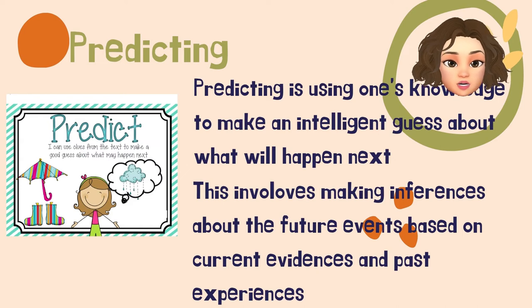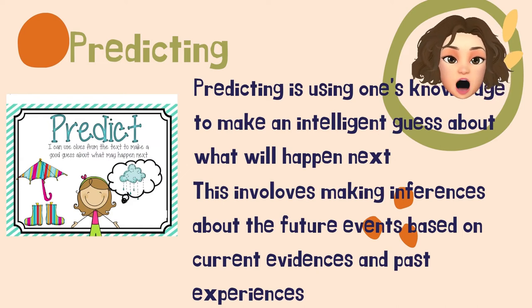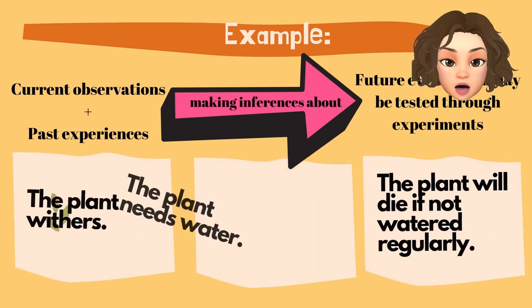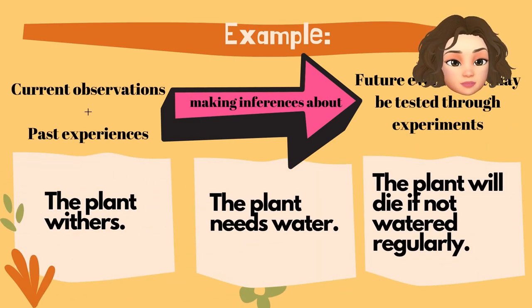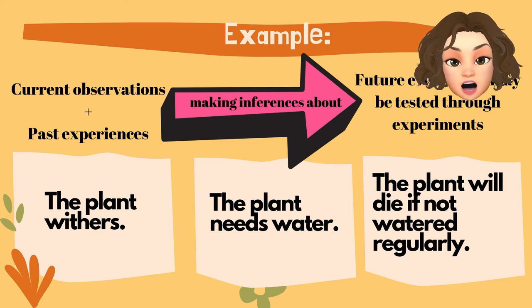Predicting is using one's knowledge to make an intelligent guess about what will happen next. This involves making inferences about future events based on current evidence and past experiences. For example, based on our observation, the plant withers and the plant needs water. Therefore, the plant will die if not watered regularly.